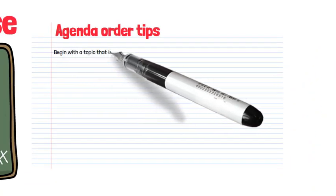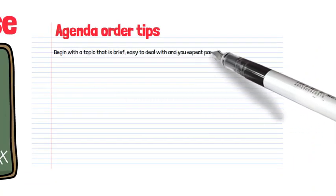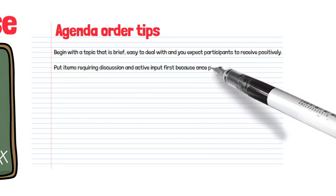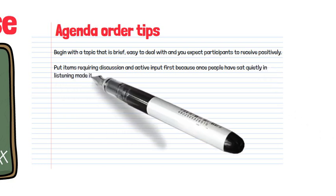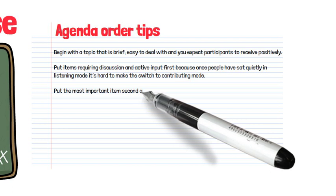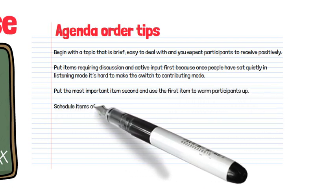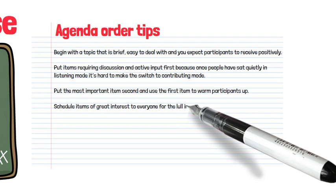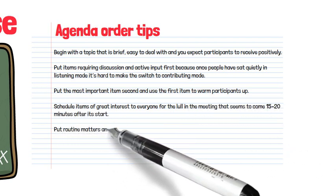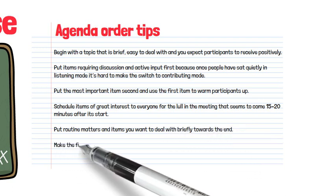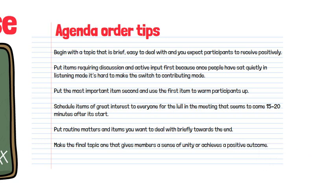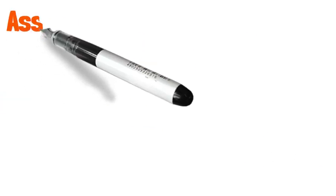Here are some suggestions for the order of agenda items: Begin with a topic that is brief, easy to deal with and you expect participants to receive positively. Put items requiring discussion and active input first, because once people have sat quietly in listening mode it's hard to switch to contributing mode. Put the most important item second, using the first item to warm participants up. Schedule items of great interest to everyone for the lull that comes 15 to 20 minutes after the meeting starts. Put routine matters towards the end, and make the final topic one that gives members a sense of unity or achieves a positive outcome.